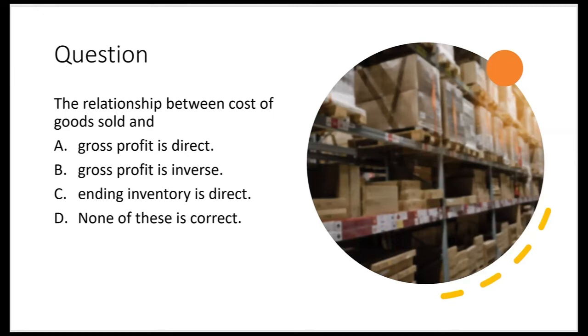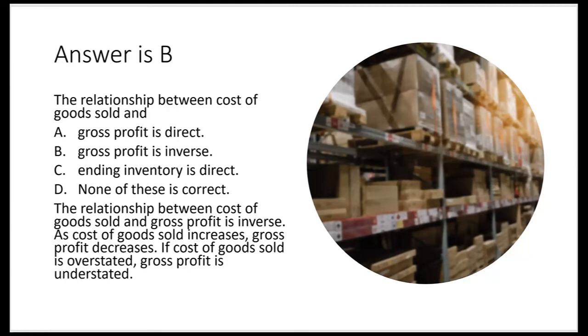B looks good. How about C — is the relationship between cost of goods sold and ending inventory direct? No, it's inverse: cost of goods sold up, ending inventory down. So letter B is the correct answer.